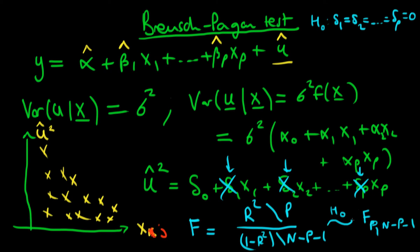We look up the critical value for an F distribution with those degrees of freedom, and if our F statistic exceeds that value we reject the null hypothesis of homoskedasticity. However, this doesn't tell us what's causing the heteroskedasticity — it only tells us that for at least one variable, δᵢ ≠ 0. That's the cost of this test. You can look at individual t-stats in the auxiliary regression output to get a sense of which variable might be responsible.